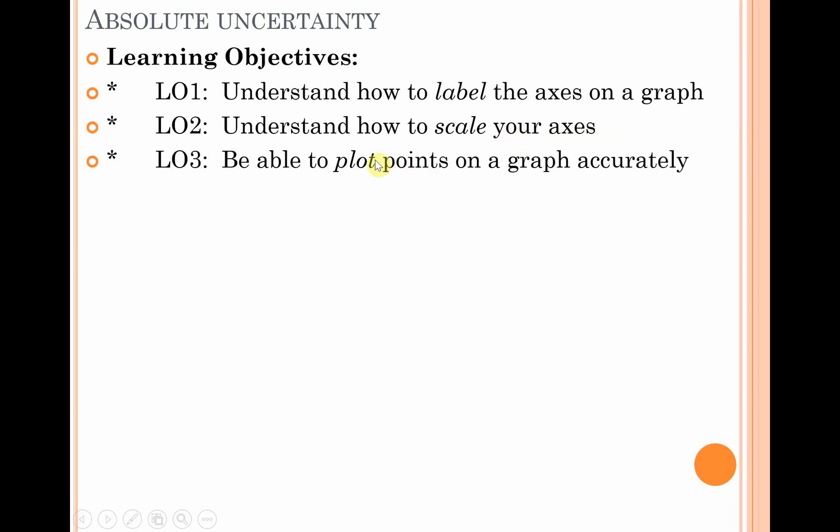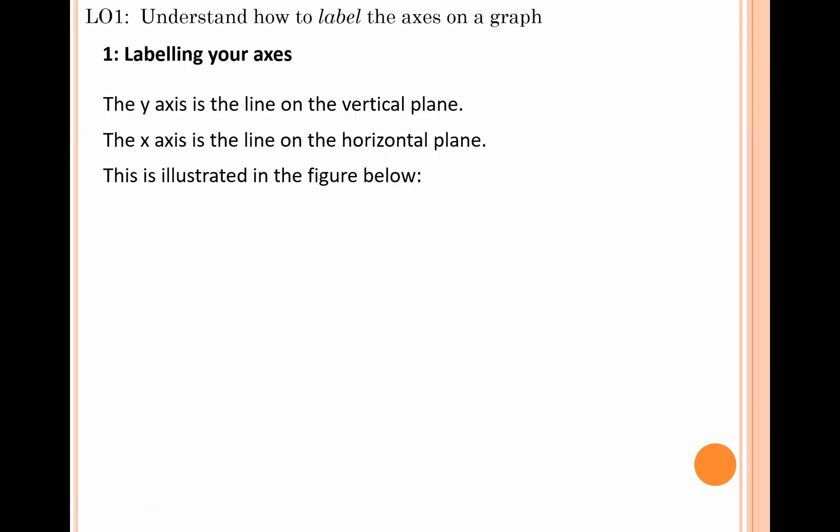The first criteria we look at here is how to label your axes. Before we get into too much detail, this should be pretty obvious from your Key Stage 3 studies and GCSE. The y-axis is the line in the vertical plane and the x-axis is the line in the horizontal plane. This is illustrated in the figure below. It may be useful to pause the screen and copy this information out, plus label the axes before we progress.